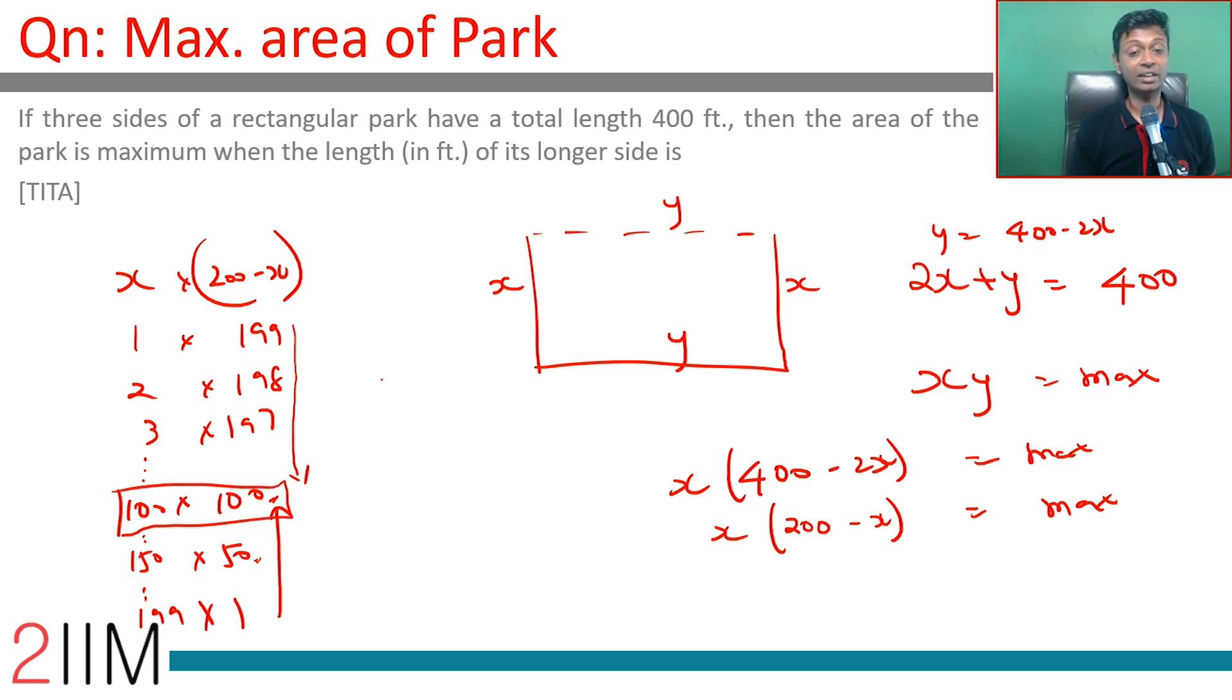When x is 100, this is 100, this is 100, this is 200, this is 200. Area of the park is maximum when x is 100 and y is 200.